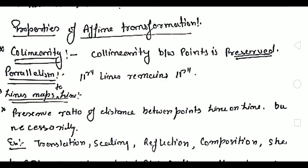Collinearity between points is preserved — meaning if any point is on one object and after transformation another object is coming, the points are the same. It doesn't happen that if A is there before transformation, A will not be there after. So this is called the point being preserved.